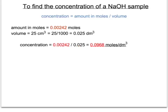Now because our concentration is our number of moles divided by our volume we do that calculation and we work out that the concentration of our sodium hydroxide solution is 0.0968 moles per cubic decimetre.